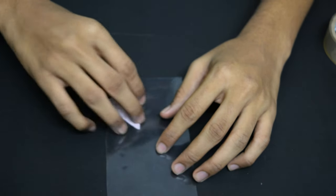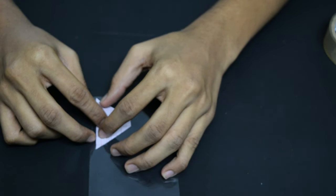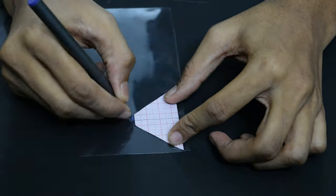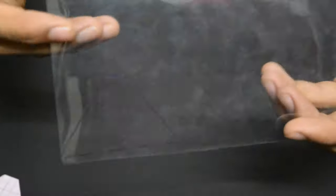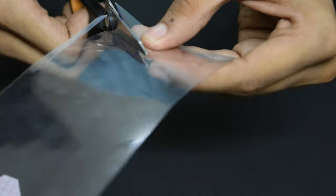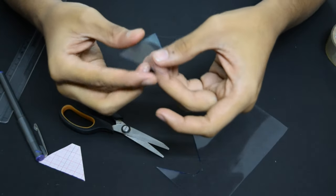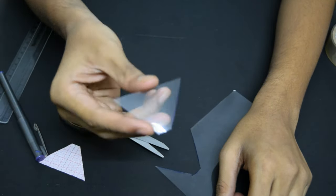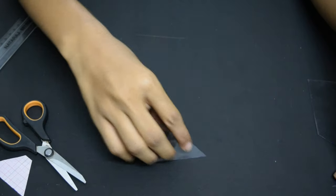Using the trapezoidal shape, draw an outline on the plastic sheet using a permanent marker and cut it out. Cut out three more identical pieces from the plastic sheet.